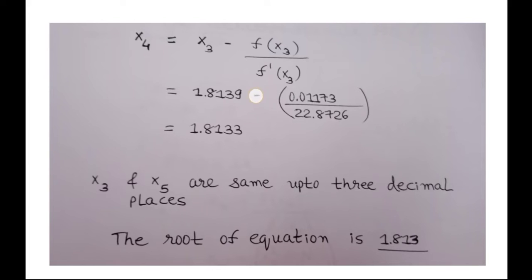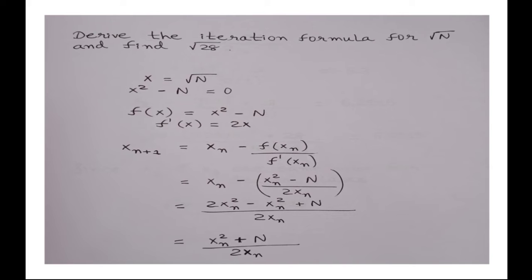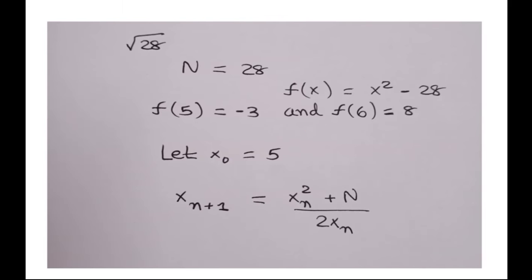Now for the second example: derive the iteration formula for root n and find root 28. Here x equals root n; squaring both sides gives x squared minus n is equal to 0, so f of x is equal to x squared minus n. Finding f dash of x gives 2x. Using x(n+1) equals x(n) minus f of x(n) upon f dash of x(n), and placing f of x(n) equal to x squared minus n and f dash of x(n) as 2x(n), we get the iteration formula: (x(n) squared plus n) upon 2x(n).